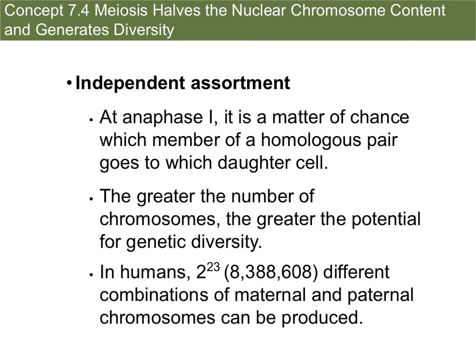In humans, we have 23 pairs of chromosomes. So if you do 2 to the 23rd — meaning there are two chances for each of those 23 pairs — that gives us 8,388,608 different combinations of maternal and paternal chromosomes that can be produced. This is essentially why not all sibling sets are twins: each gamete has a different combination of those homologous pairs.